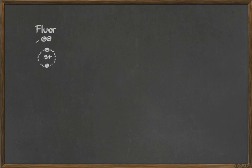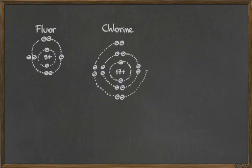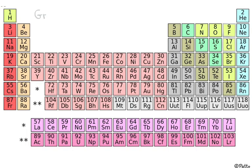One more example of groups. Fluorine contains nine protons, so it contains two electrons in the first shell and seven electrons in the last shell. Chlorine has 17 protons, so it contains two in the first shell, eight in the second, and seven electrons in the last shell. You probably realize that fluorine, chloride, bromine, iodine — they are group seven. They are going to have seven electrons in the last shell.